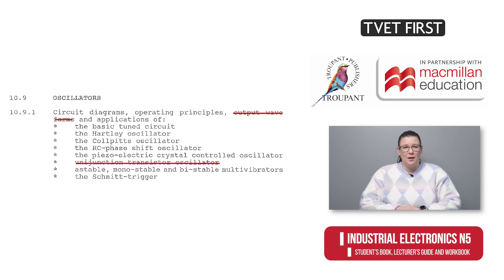In Module 6, the syllabus no longer specifies the ramp staircase, dual ramp, voltage to frequency, and successive approximation type voltmeters, but simply states different voltmeters. In Module 7, uni-junction transistor oscillators and the output waveforms of oscillators are no longer part of the curriculum.